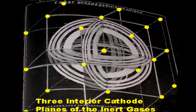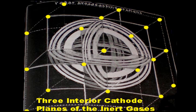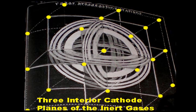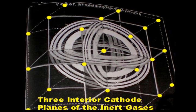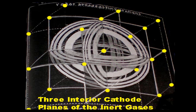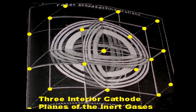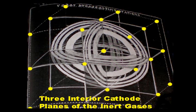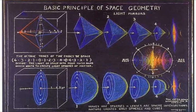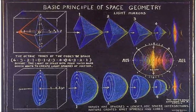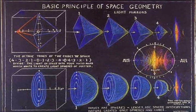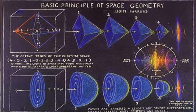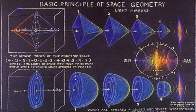Spherical bodies are formed by the intersections of the inert gas rings on the three interior cathode planes of each cubic wave field. This diagram reveals the open holes, or cathode condition, of the rings which give form to the spheres.